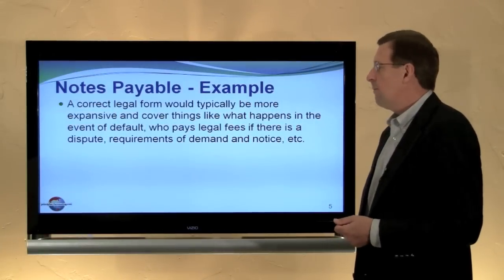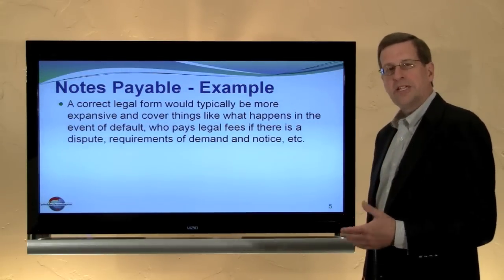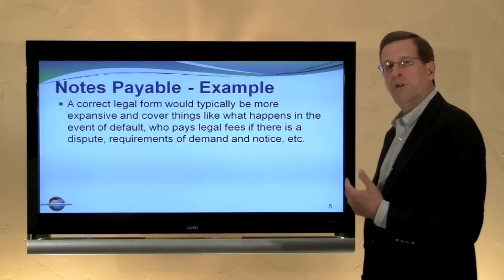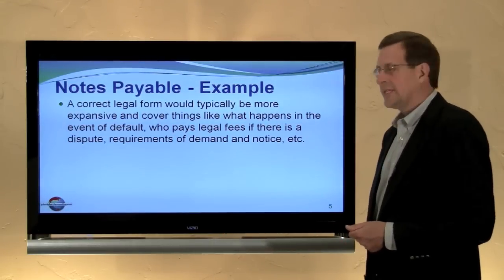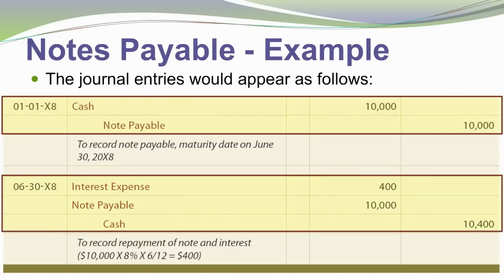A correct legal form for a note would typically be more expansive than what I've illustrated, including things such as what happens in the event of default, who pays legal fees, and requirements for demand and settlement. Here's the journal entry: on January 1, when the note is created, we debit cash and credit notes payable $10,000. On the payment date, June 30th, when we pay the $10,400 in cash, we debit notes payable $10,000 and debit interest expense $400, with a credit to cash for the full $10,400.